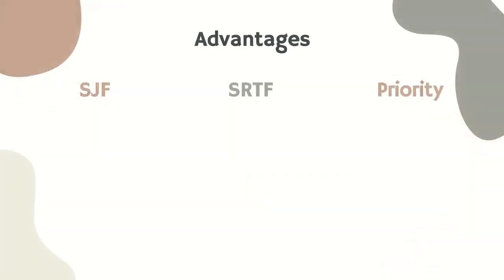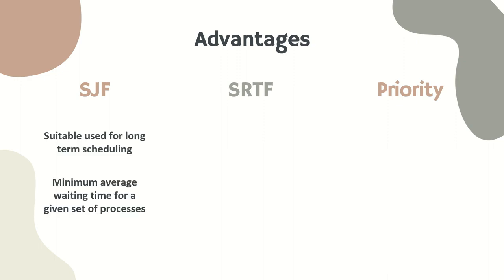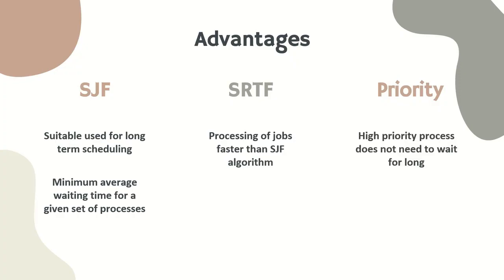Five advantages: For SJF, it is suitable for long-term scheduling and also has the minimum average waiting time for a given set of processes. Meanwhile, for SRTF, processing of jobs is faster than the SJF algorithm. For priority scheduling, high priority processes do not need to wait for long.